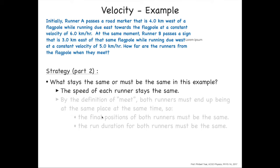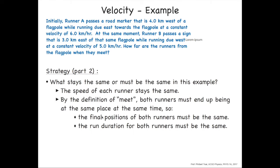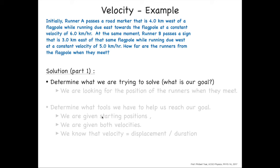Well, the speed of each runner is constant, so they're constantly running at six kilometers per hour and five kilometers per hour, respectively. And by the definition of meet, both runners must end up being at the same place at the same time. So that means the final positions of both runners must be the same, and the run duration for both runners must be the same. So armed with that starting information, let's start working through the solution.